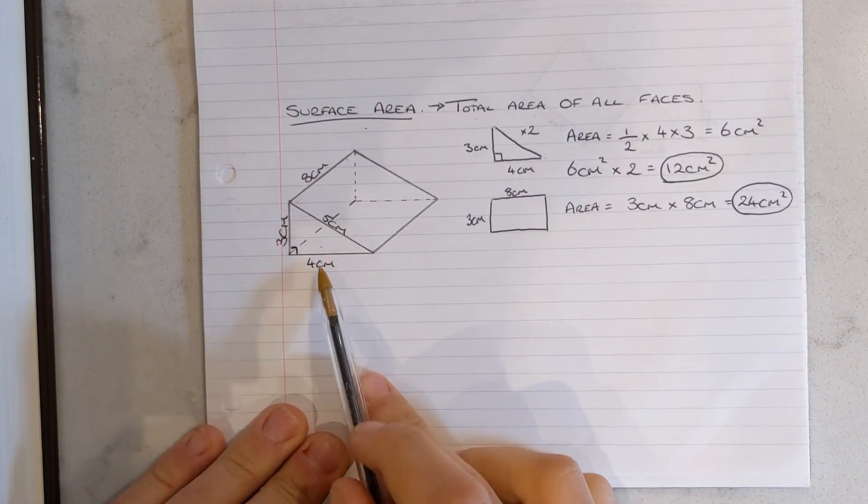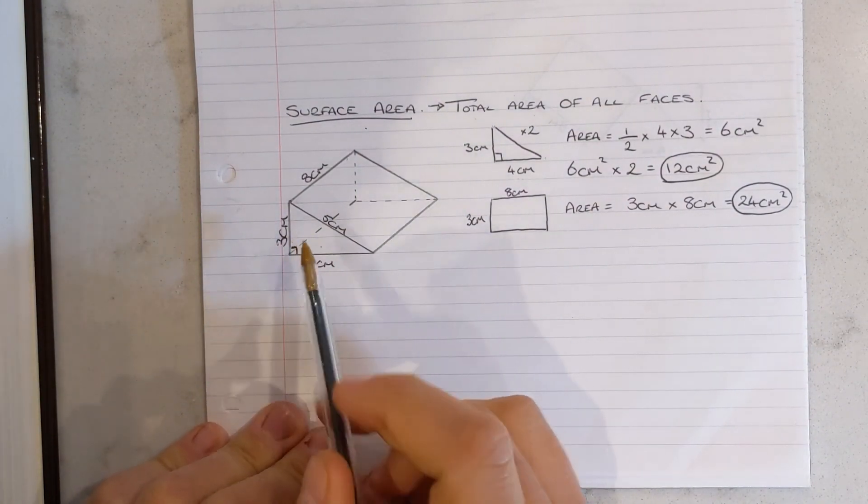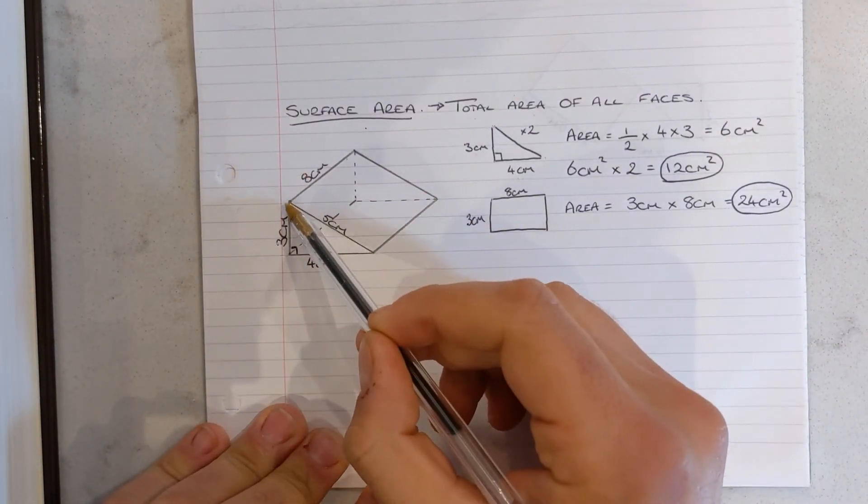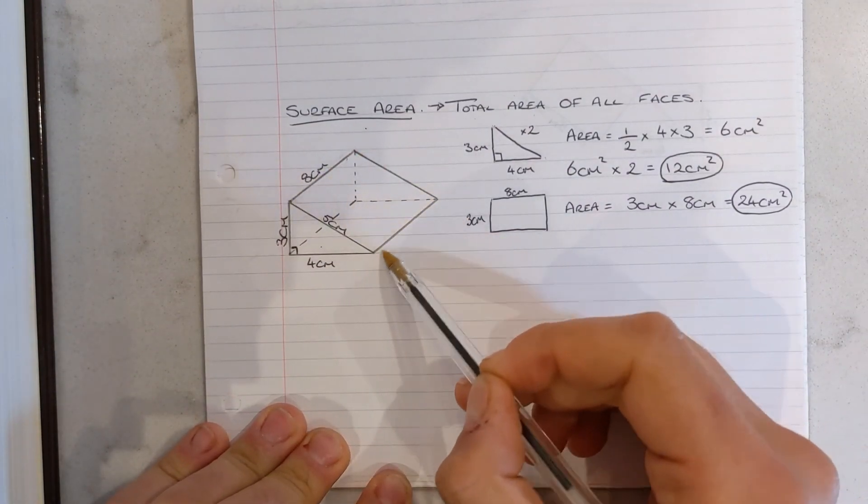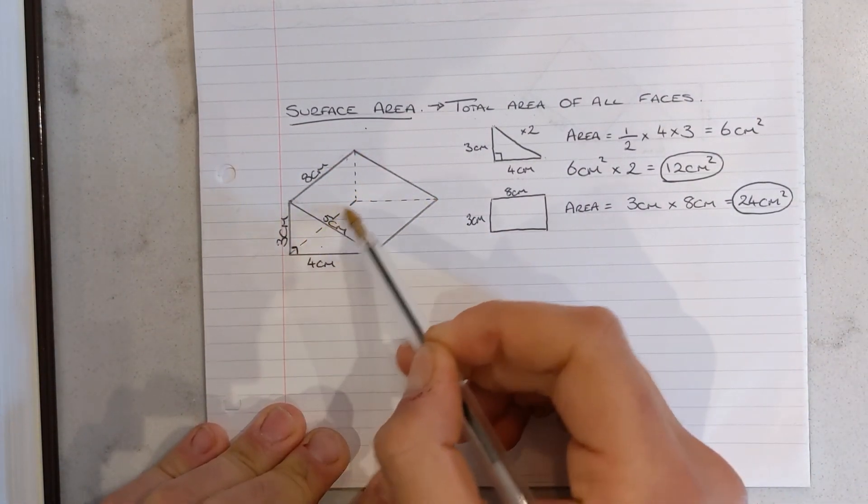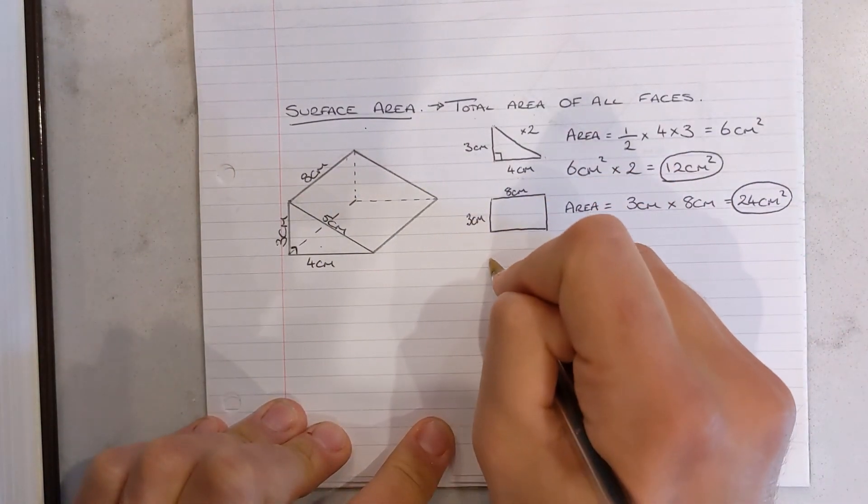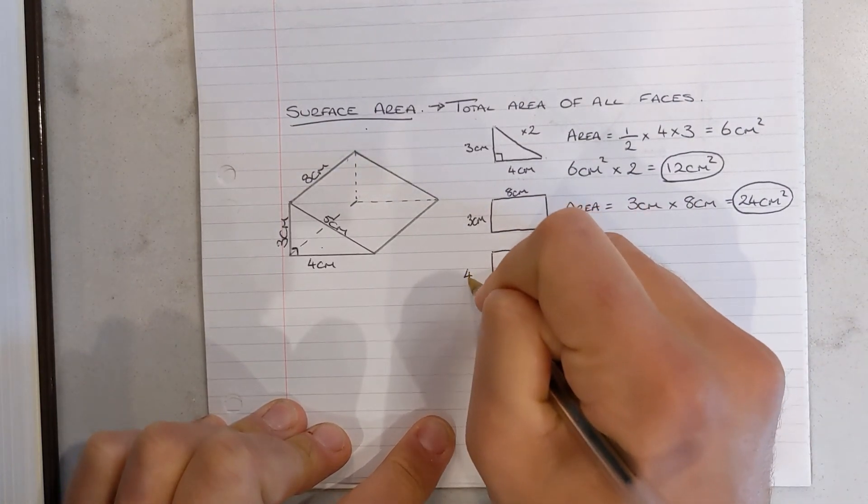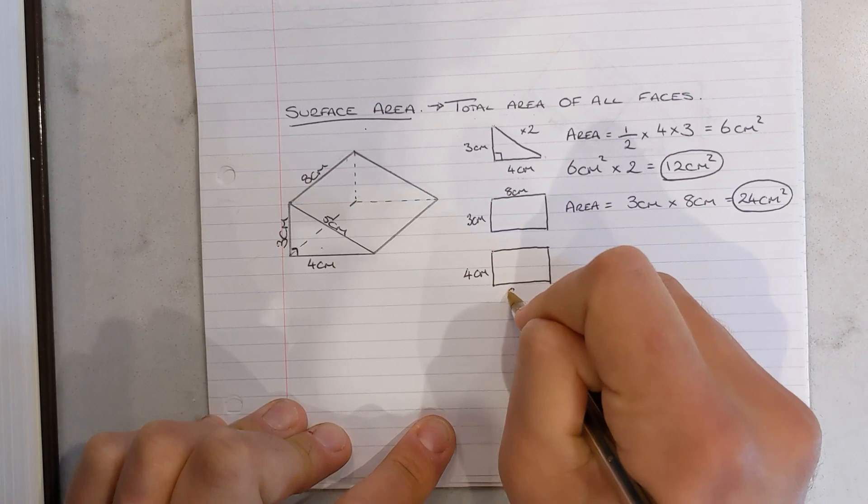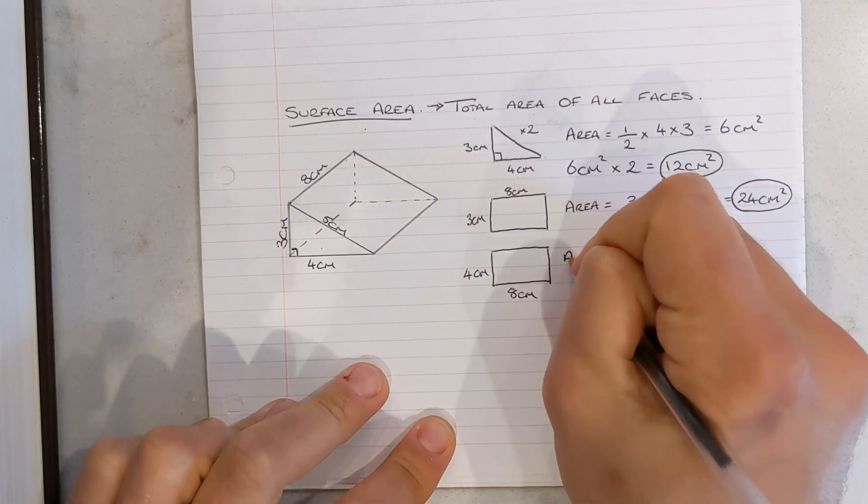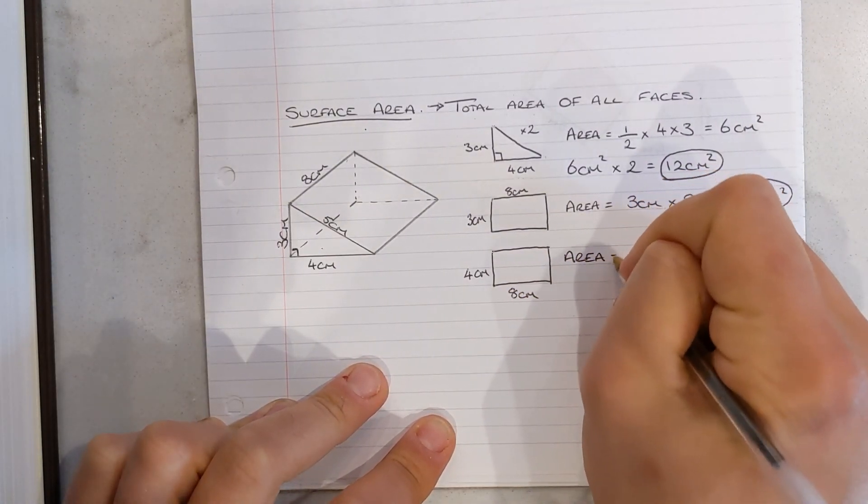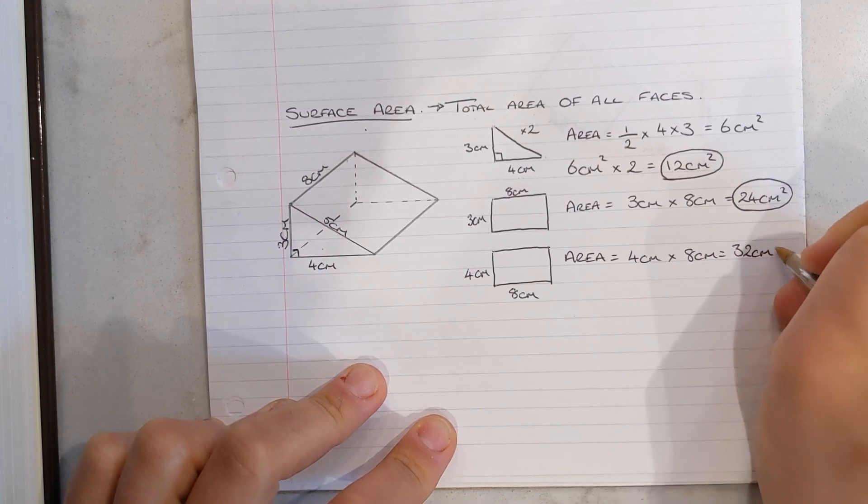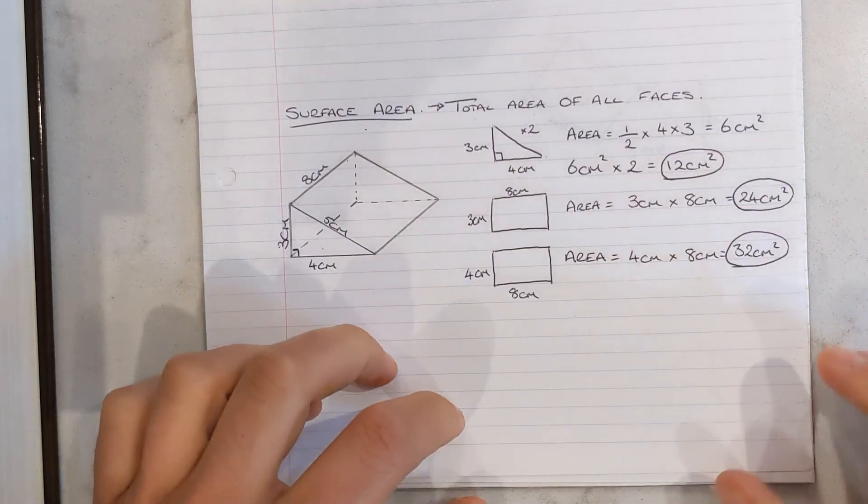And now we're going to work on this bottom rectangle, this base of my prism, which I can see is four centimeters by—I know this is eight, because I know that is eight, and therefore this must be eight as well, as is this length going along the bottom here. So I've got a very similar rectangle to what I've just drawn, it's going to look pretty identical, but the dimensions are going to be slightly different. So the width is now going to be four and the length is now going to be eight. And I know the area of this is equal to four centimeters times eight centimeters, 32 centimeters squared. And again, I'm going to circle that one.